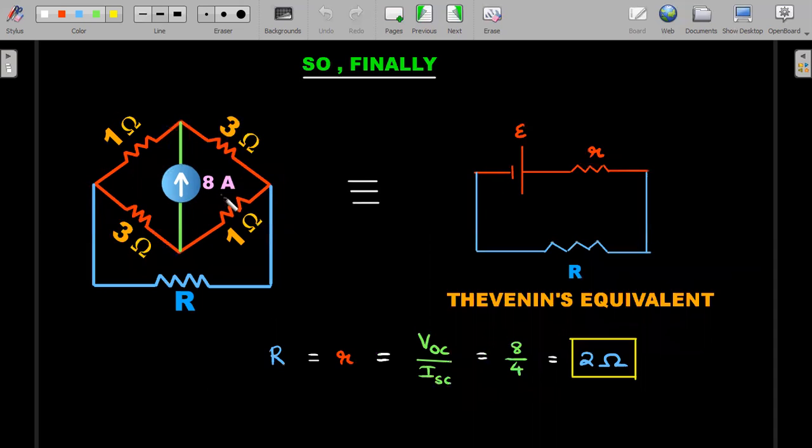So finally, this one's Thevenin's equivalent goes to this, and the value of the small r, which is VOC divided by ISC, is 2 ohm, which in turn should be the value of capital R for the maximum power theorem to be successful. So the final answer, after all these steps, and this was not about just the question, it was learning about the different steps and fundamental concepts involved in this problem. Any of these steps could be your final JEE advanced examination question.